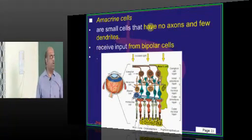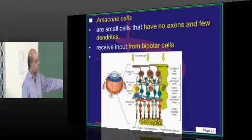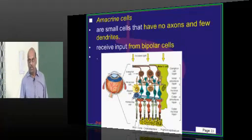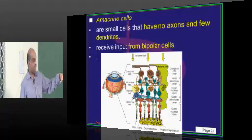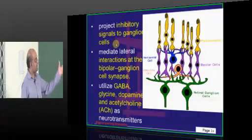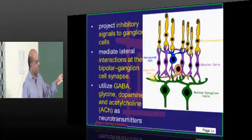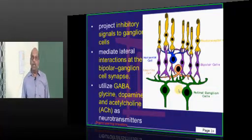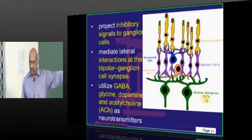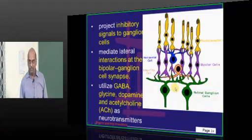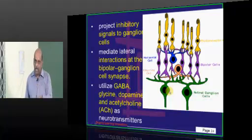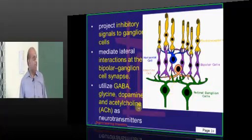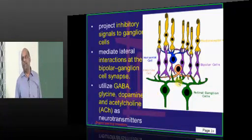We have another type of interneuron called amacrine cells. You can see this is the amacrine cell. These are the amacrine cells. They don't have any axons but they have few dendrites. They receive input from the adjacent bipolar cells and in turn project inhibitory signals to the ganglion cells. What is their importance? Since they receive input from bipolar cells and project to ganglion cells, they create a bipolar-ganglion cell synapse. They are the mediators of connectivity between bipolar and ganglion cells. These interneurons called amacrine cells utilize GABA, glycine, dopamine, and acetylcholine as neurotransmitters.